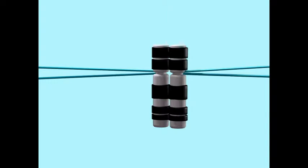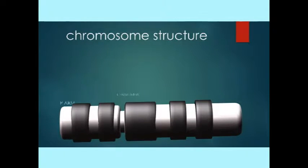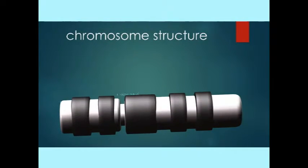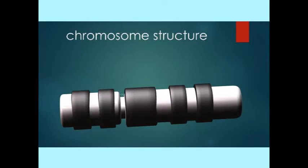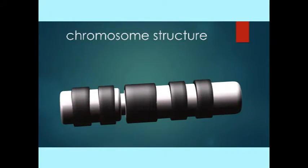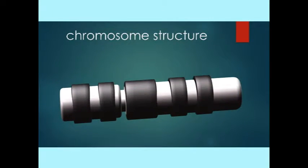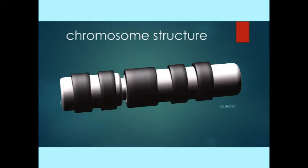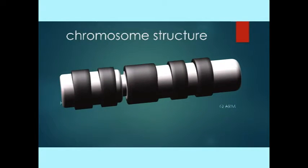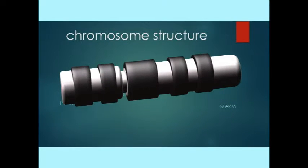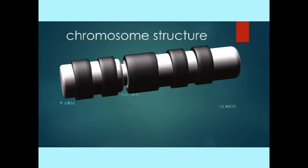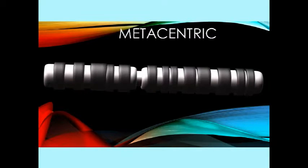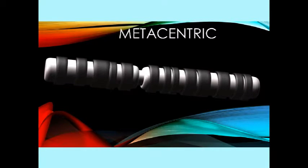This centromere divides the chromosome into the portion above it or beneath it, and the terms P and Q are used. P, meaning petite, is the shorter arm of the chromosome, and Q is the longer arm of the chromosome, given that it was the next letter in the alphabet.